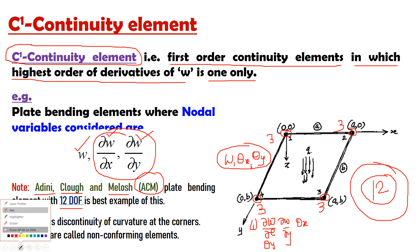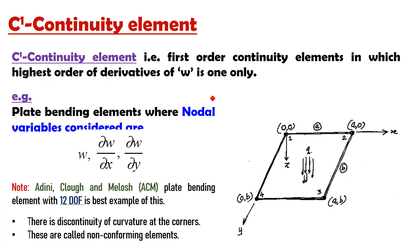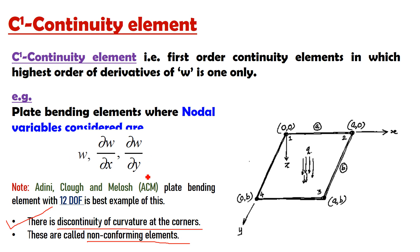But there are 2 important limitations of this element. The first limitation is that there is discontinuity of curvature at the corners of this element. Therefore, these elements are called non-conforming elements. So these are the two limitations of the C1 continuity element, that is the ACM plate bending element with 12 degrees of freedom.